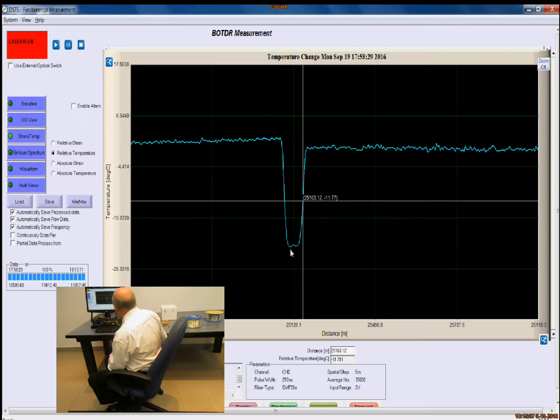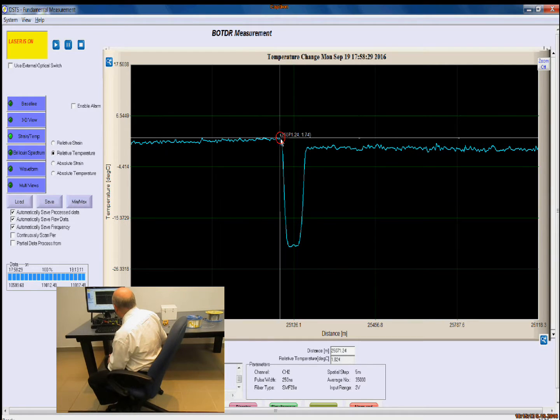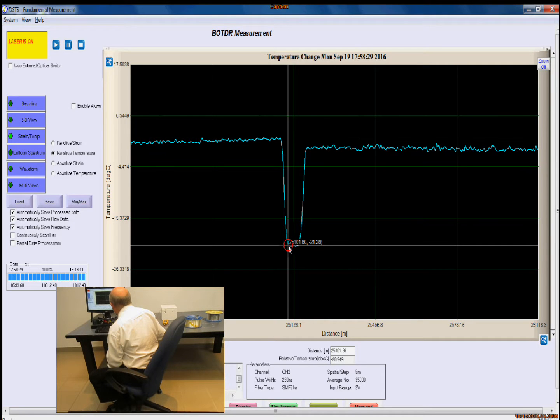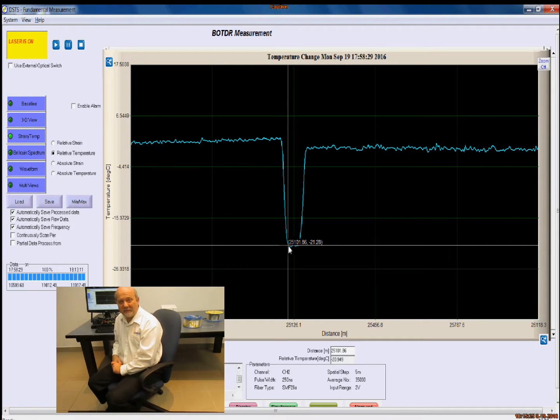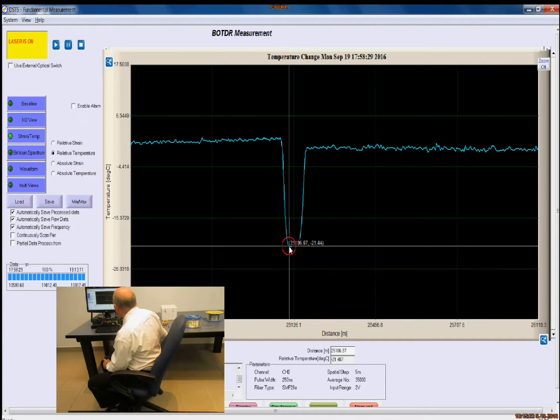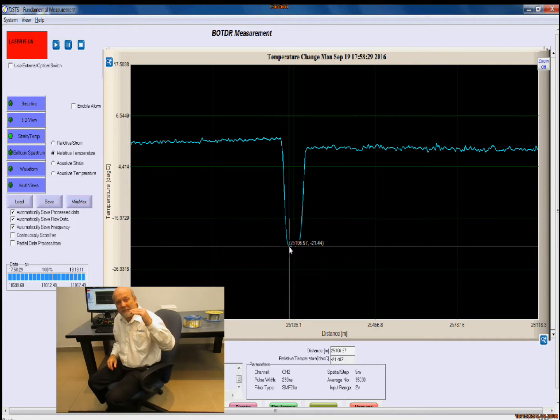Now you can see how we're limited by the pulse width. If I compare this point here, which is 25.076, with this point down here, which is 25.101, that's 25 meters. So this is the effect of the resolution, when we go from this point here to this point here. The transition is 25 meters, for it to get from room temperature down to the ice temperature of the water. That shows the resolution that's limited by our pulse width.